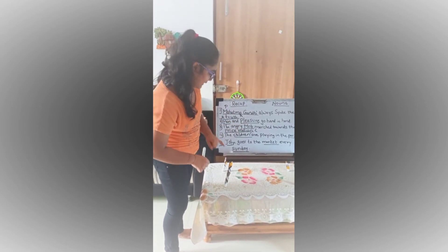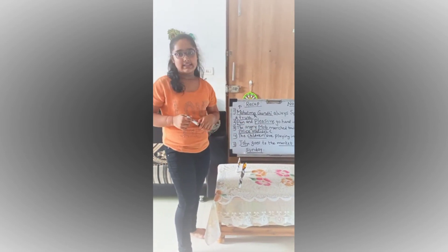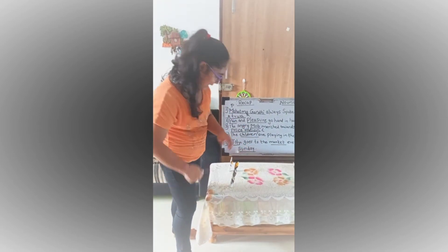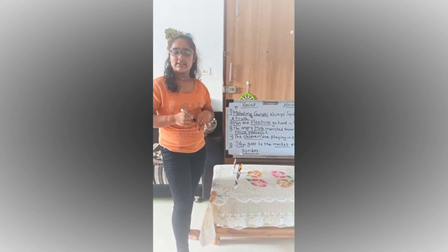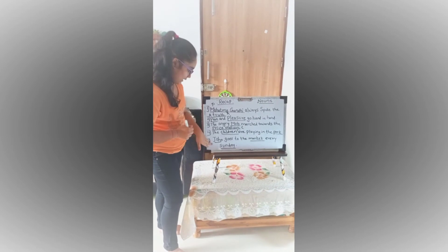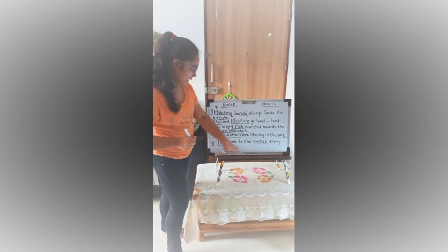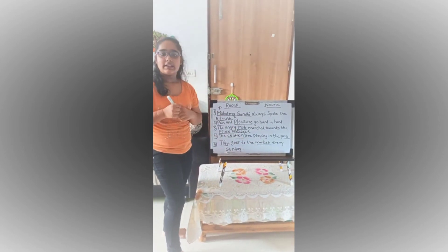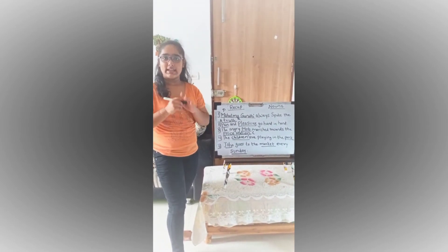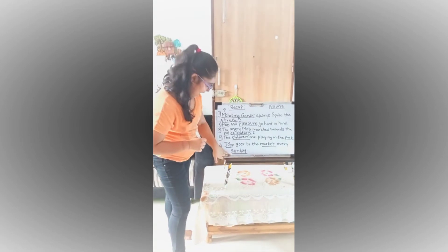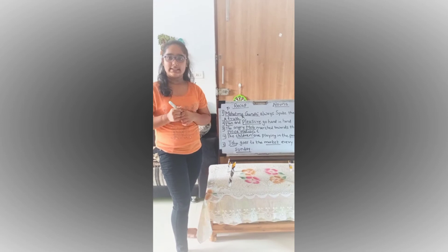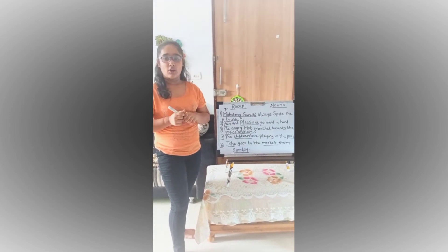Next: John goes to the market every Sunday. In this sentence we have three nouns — John, market and Sunday. John is a proper noun because it's the name of a specific or particular boy. Market is the common noun because we are not specifying any particular market but speaking in general. And Sunday is the name of a particular day, that's why it's a proper noun.